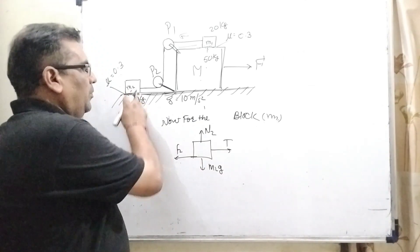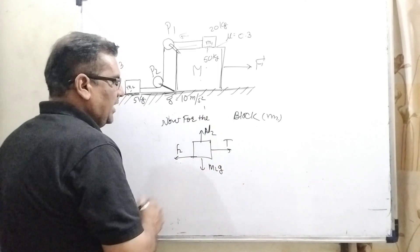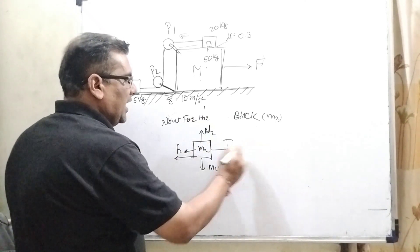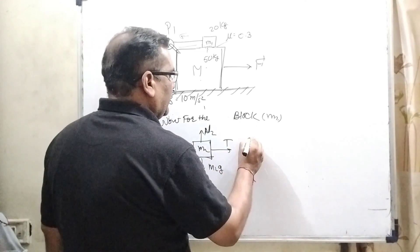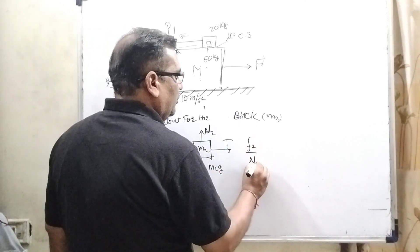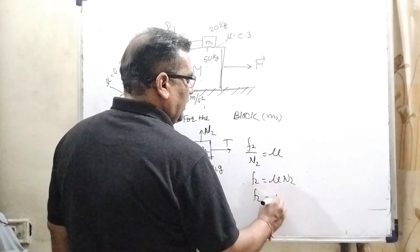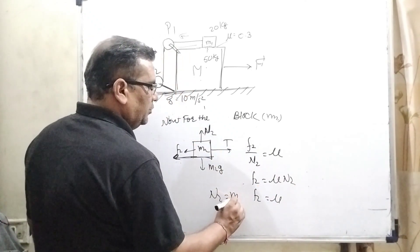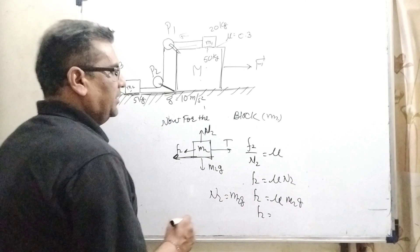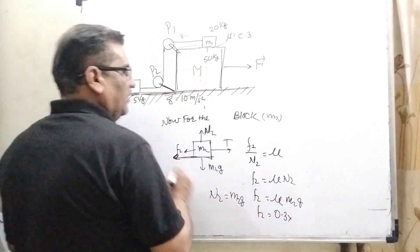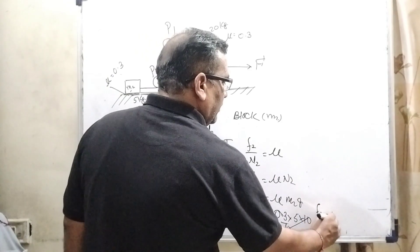Now for the M2 block we can see that labeling N2 is acting upward direction. M2g is acting downward direction. Here M2 block moving towards to the right side. So therefore friction is acting left side. Okay, as we know that from the laws of friction F2 upon N2 equal to mu. Here F2 equal to mu N2 and as we know that N2 equal to M2g. So here M2g, what is mu here? Mu is given 0.3, weight of the body is given 5 kilogram and it is 10. So now F2 is equal to 15 Newton.